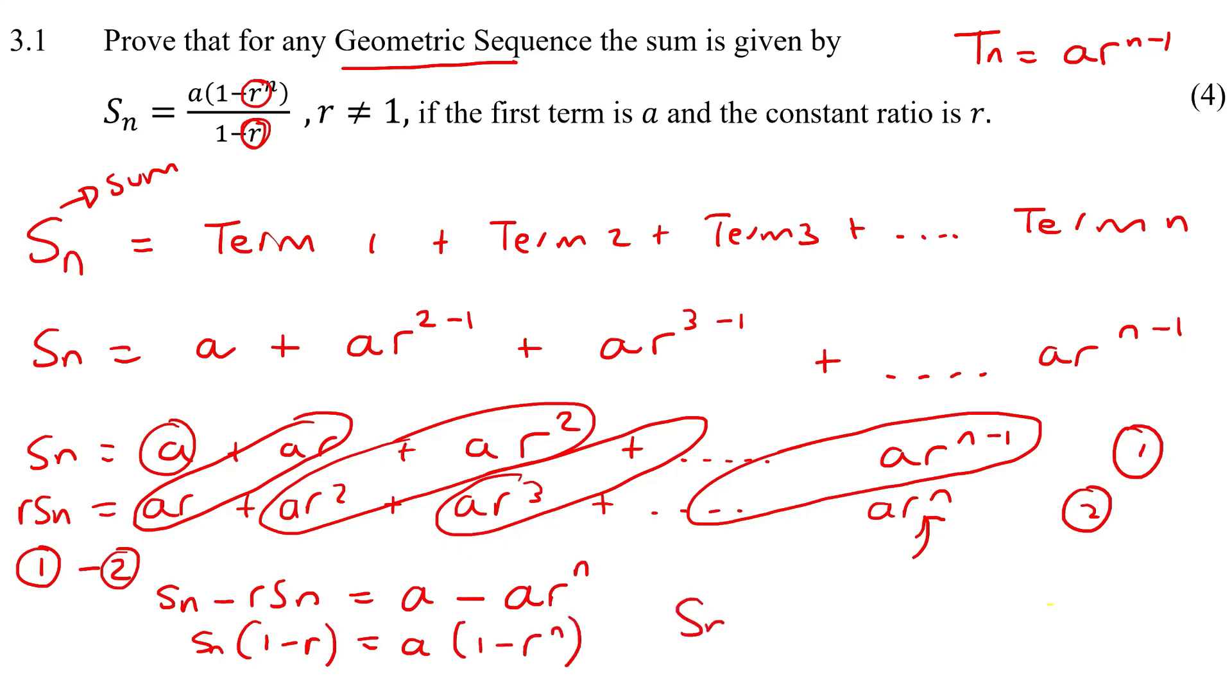And then you're just going to get Sn by itself by dividing by one minus r. And there we've created the formula.